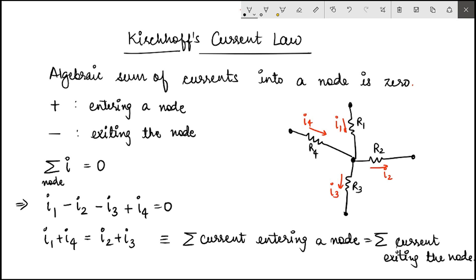KCL can very simply be implemented using nodal analysis. Nodal analysis refers to finding currents using node voltages. If this is node A with voltage VA, and the other nodes have voltages V1, V2, V3, and V4 — these are the node voltages. One must understand that node voltages are measured with respect to ground, not with respect to each other. A node voltage refers to the voltage of that particular node with respect to ground.